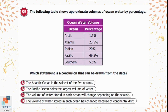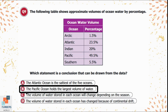Question 9: The following table shows approximate volumes of ocean water by percentage — Arctic 1.5%, Atlantic 23.5%, Indian Ocean 20%, Pacific Ocean 49.5%, Southern Ocean 5.5%. Which statement is a conclusion that can be drawn from the data? Option A: the Atlantic is the saltiest. Option B: the Pacific holds the largest volume of water. Option C: volume changes by season. Option D: volume has changed due to continental drift. Looking at the table, we can conclude the Pacific Ocean holds the largest volume of water at 49.5% — option B is correct.